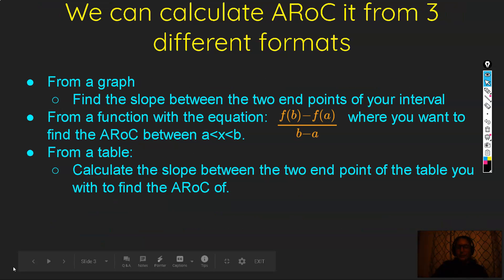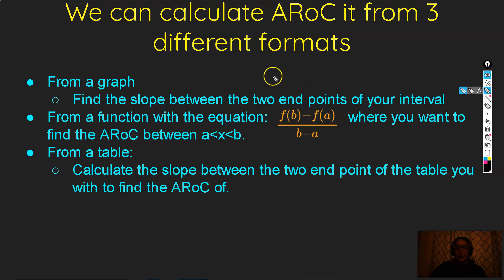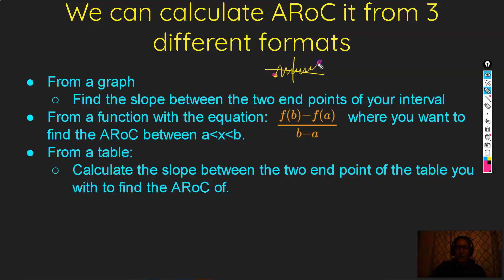We can calculate AROC — average rate of change — from three different formats. From a graph, we find the slope, using y2 minus y1 over x2 minus x1, finding the slope between the two endpoints of your interval. No matter how complex your graph looks, even if the middle looks like gargly goop, we still just find the linear slope between those two endpoints.